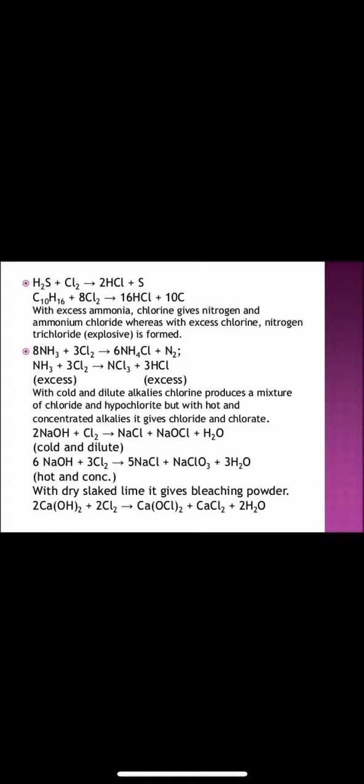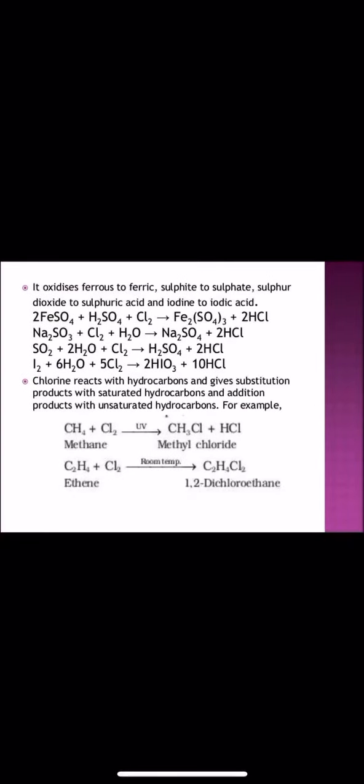Ammonia reacts with chlorine to form ammonium chloride and if excess of chlorine is used, we get NCl3 and HCl. With cold and dilute alkalis, chlorine produces a mixture of chloride and hypochlorite. But with hot and concentrated alkalis, it gives chloride and chlorate as shown in the chemical reactions here. With dry slaked lime, it gives bleaching powder, calcium oxychloride. These are very important reactions of halogens usually asked in the examination.